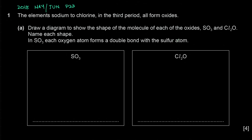In SO₃, each oxygen atom forms a double bond with the sulfur atom. Sulfur has six outer electrons and is making a double bond with each of the three oxygens — a sigma bond and a pi bond with each. So we have three double bonds around the sulfur atom and because all six electrons are bonded, there are no lone pairs. Three sigma bonds and no lone pairs means trigonal planar geometry, with a 120° bond angle.